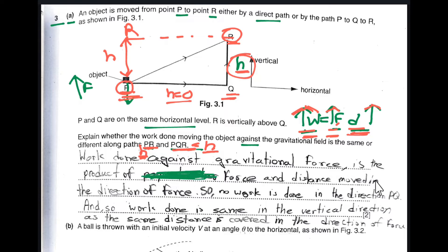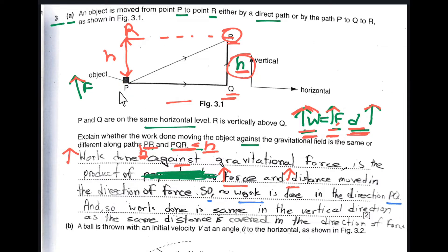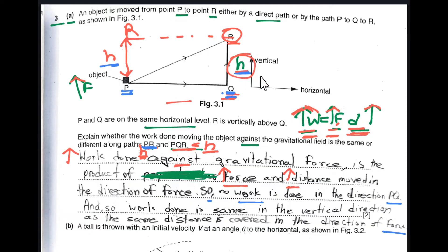Work done against gravitational force is the product of force and the distance moved in the direction of the force — acting upward since it is against gravitational force. No work is done along PQ since the vertical distance from P to Q is zero. From P to R and from P to Q to R, the same vertical distance H is covered, so the same work is done.